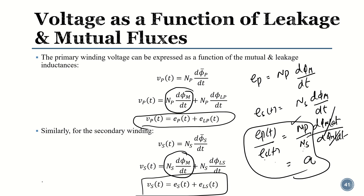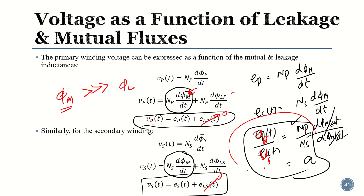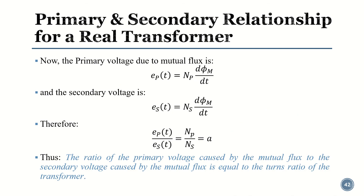For an ideal transformer, the mutual flux is much much greater than the leakage flux. Therefore the leakage voltage terms are very small and can be approximated as zero. This means E_p can replace V_p, and the simplified result is primary voltage divided by secondary voltage equals the number of primary turns divided by the number of secondary turns — our original turn ratio formula, now derived.